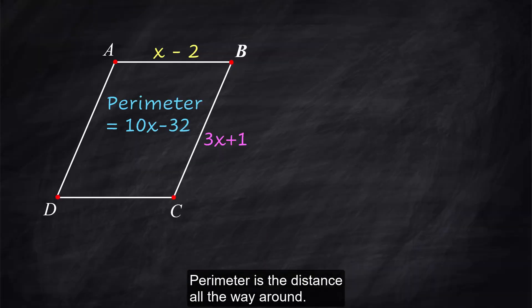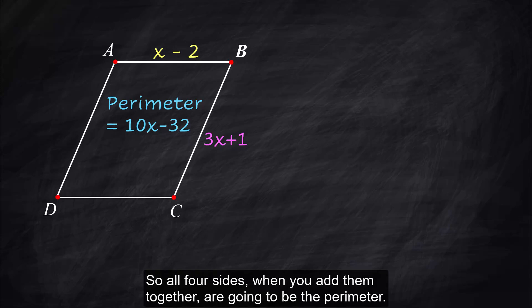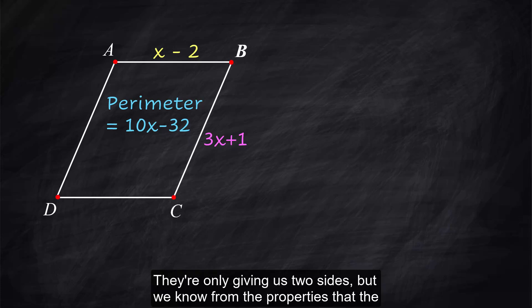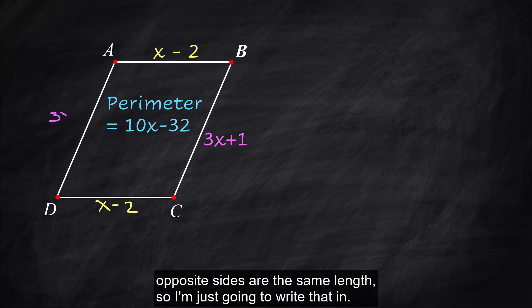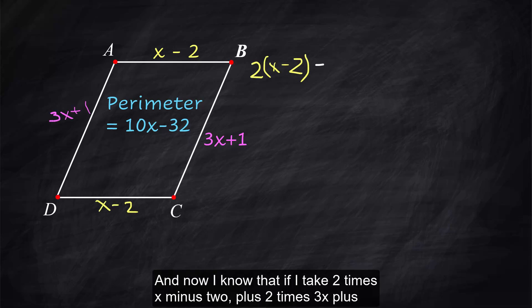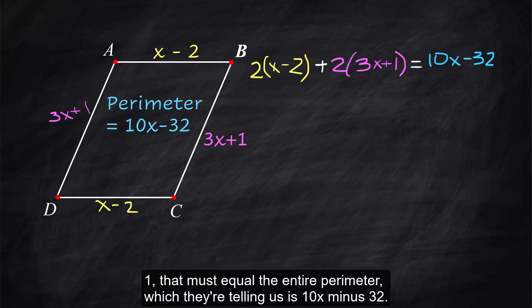Perimeter is the distance all the way around so all four sides when you add them together are going to be the perimeter. They're only giving us two sides but we know from the properties that the opposite sides are the same length so I'm just going to write that in and now I know that if I take 2 times x minus 2 plus 2 times 3x plus 1 that must equal the entire perimeter which they're telling us is 10x minus 32.